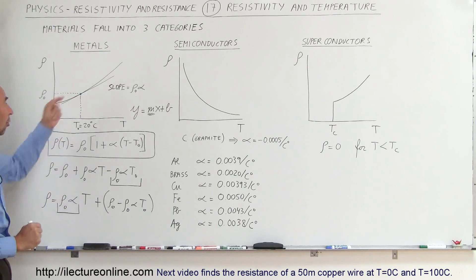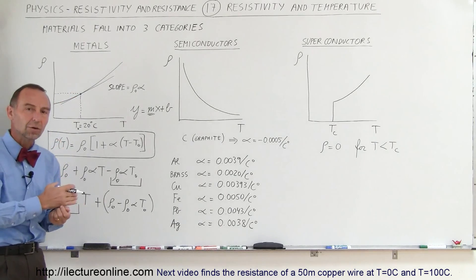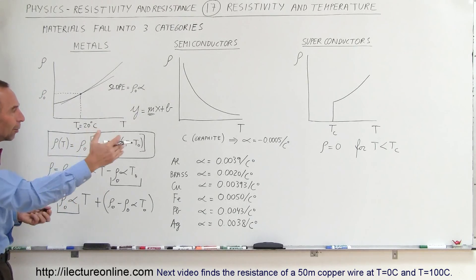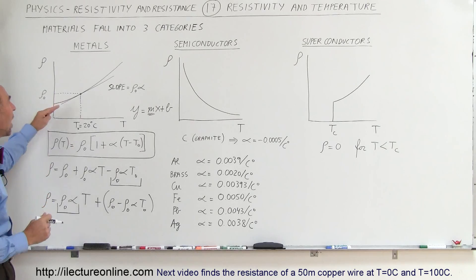The resistivity times the temperature coefficient multiply together to form the slope of that line. We find that for most temperatures between maybe zero degrees centigrade all the way up to 100 degrees centigrade, that is a fairly accurate representation.